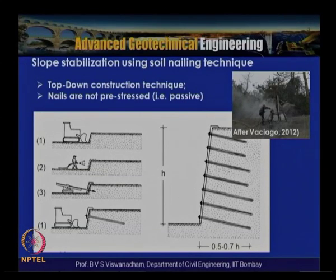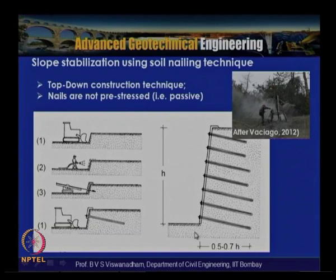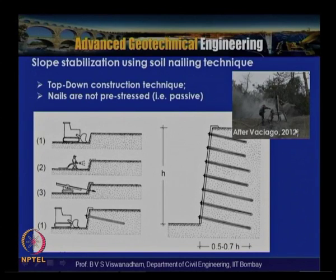Slope stabilization using soil nailing is a top-down construction technique, very useful for temporary shoring in underground excavations. The process involves excavating level 1, providing a shotcrete facing on the surface, installing the nail, then excavating further — installing nails from nail 1 through to the toe of the slope in sequence. A typical installation using a specific rig used in the field is shown.